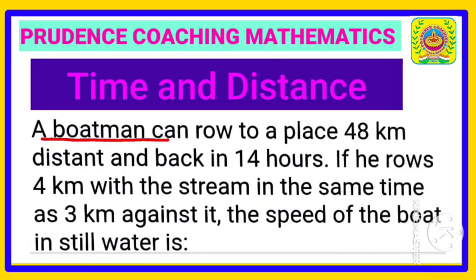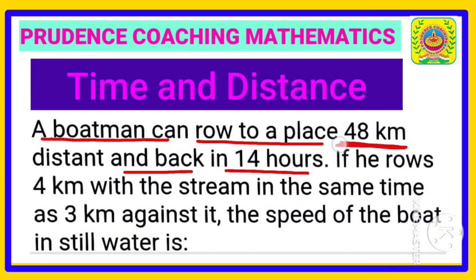A boatman can row to a place 48 km and back in 14 hours. He will go with the stream (downstream) and come back against the stream (upstream), taking a total of 14 hours to travel 48 km upstream and 48 km downstream. He rows 4 km with the stream, meaning downstream, in the same time.